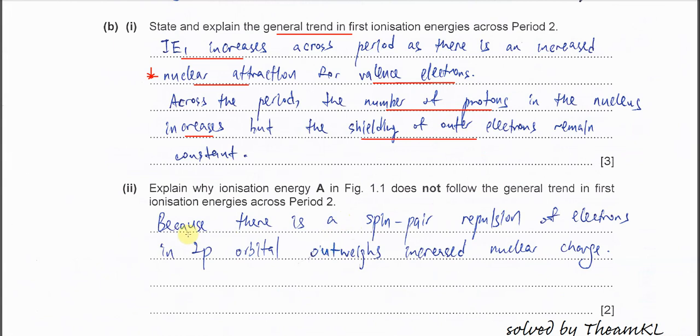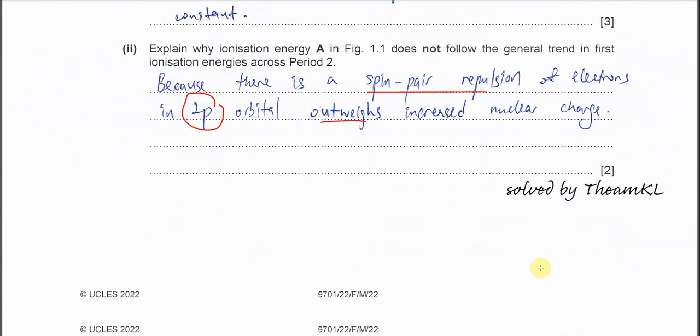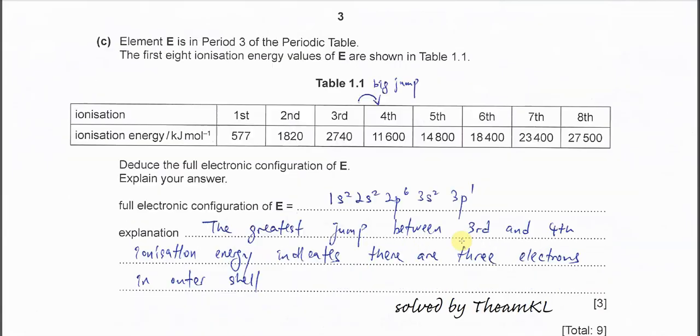That's how you understand and explain later. Okay, very easy. You just need to mention there is a spin pair repulsion of electrons in the 2P orbital. Because it's period 2, right? It's 2P. Period 3 is 3P. And this spin pair repulsion, okay, it outweighs the increased nuclear charge. So that's why it slightly decreased.